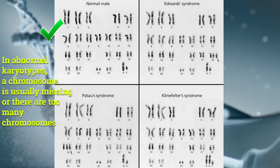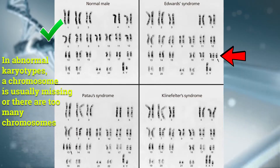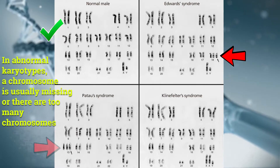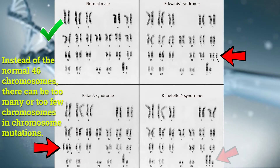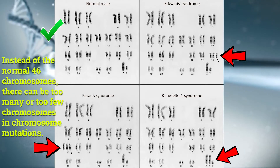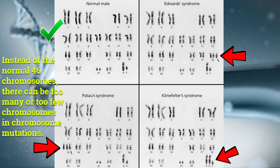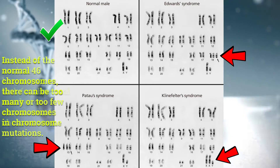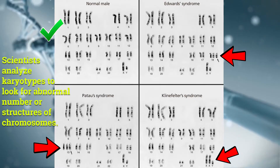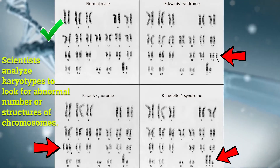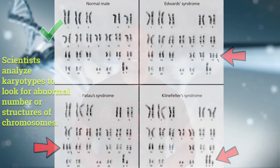In a normal karyotype, we have 23 pairs of chromosomes in all. In abnormal karyotypes, a chromosome is usually missing or there are too many chromosomes. So instead of the normal 46 chromosomes, there can be too many or too few chromosomes in chromosome mutations. Scientists analyze karyotypes to look for abnormal number or structures of chromosomes. In today's video, we will analyze the karyotype of the different chromosome mutations as we follow along.